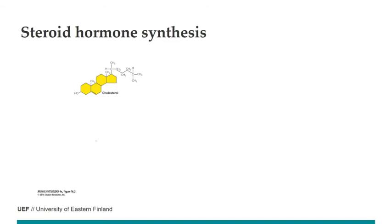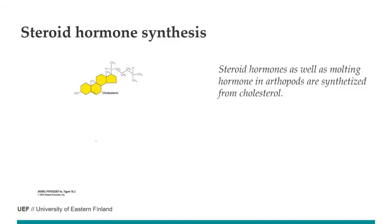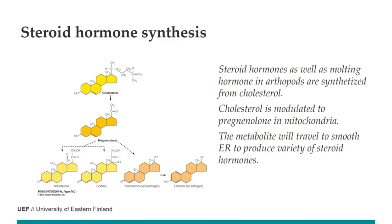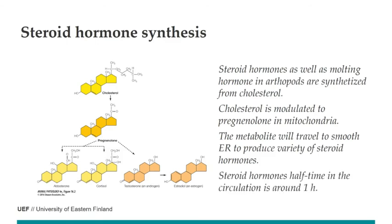Regarding different kinds of hormones: steroid hormones are produced from cholesterol. The process starts in the mitochondria to produce pregnenolone, and this metabolite is then moved to the smooth endoplasmic reticulum to produce different steroid hormones. Their basic structure is very similar; the main differences are in the carbon chain at the top. In circulation, the half-life of steroids is around one hour, so they must be continuously released.